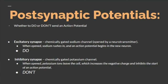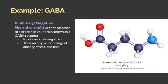Post-synaptic potentials determine whether or not to send an action potential. The excitatory synapse is a chemically gated sodium channel opened by a neurotransmitter — when opened, sodium rushes in and action potential begins, so it is a 'do.' The inhibitory synapse is a chemically gated potassium channel — when opened, potassium ions leave the cell, increasing negative charge and inhibiting the action potential, so it is a 'don't.' An example is GABA (gamma-aminobutyric acid), an inhibitory neurotransmitter that attaches to GABA receptors, producing a calming effect and helping with feelings of anxiety, stress, and fear.